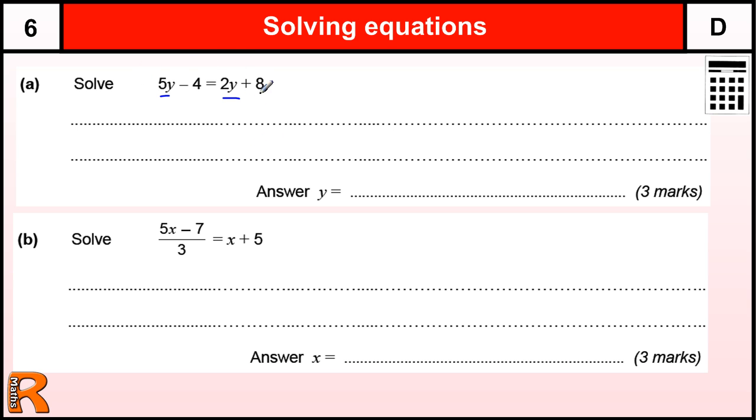The standard technique we use for equations is to do the same to both sides. If I want to remove one of these y's, if I take away the smaller of the 2y's from both sides, if I take away 2y from here that gets rid of the 2y. 5y minus 2y is 3y and everything else stays the same.